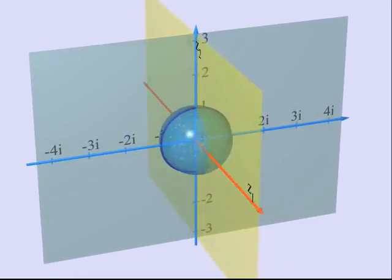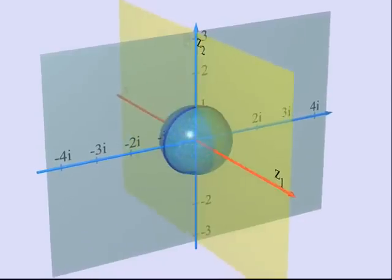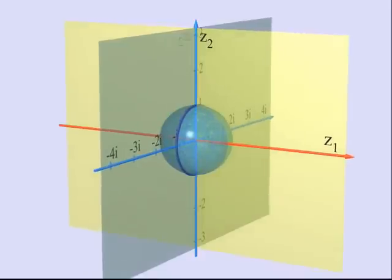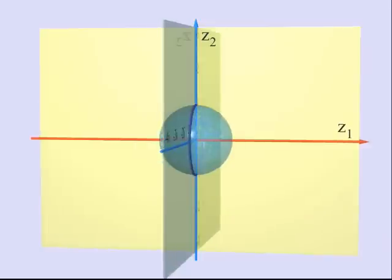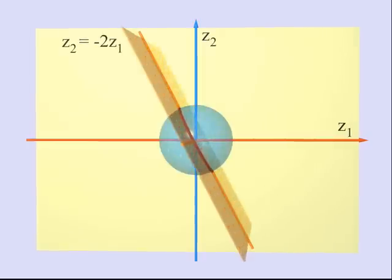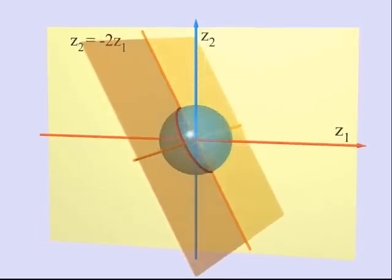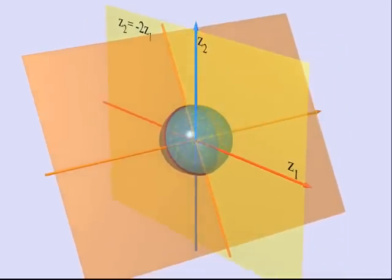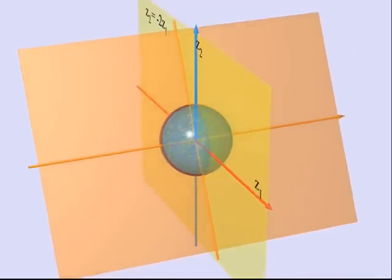Now what is true for the horizontal line and the vertical line is equally true for all lines going through the origin. Here you can see the line with equation Z2 equal to minus 2 Z1. But we could do the same with any line Z2 equal to A times Z1 for any complex number A.